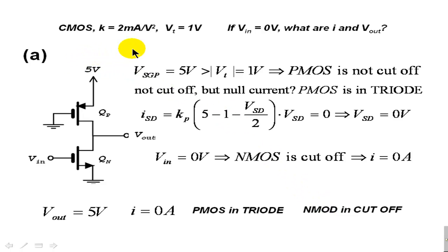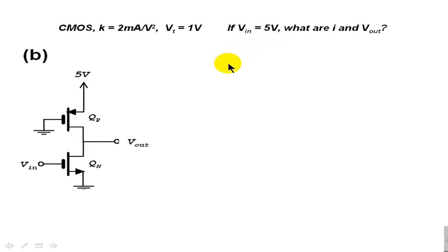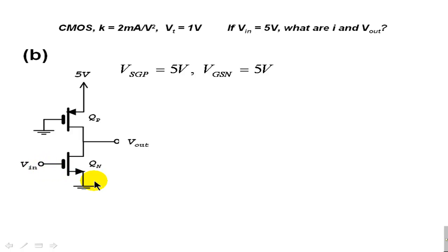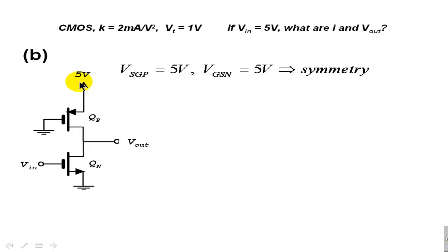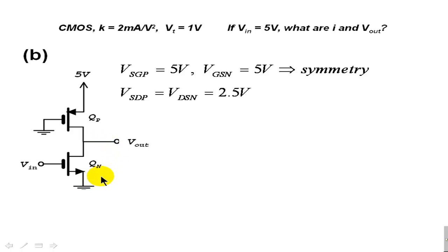Let's repeat the exercise with a different input value. For part B, the input is 5 volts at the gate of the N transistor. If we apply 5 volts here, that produces a symmetrical situation between both transistors. The P transistor has its source higher than the gate by 5 V, and the N transistor has its source lower than the gate by 5 V — symmetry! That means the source-drain voltages are going to be exactly the same: they have to be half the total voltage, 2.5 volts.